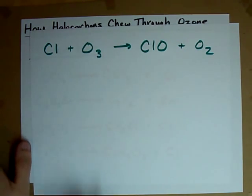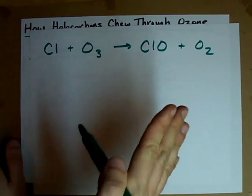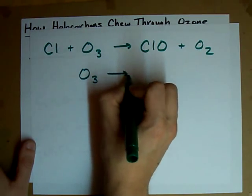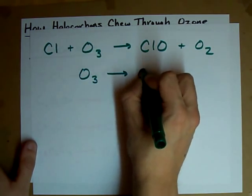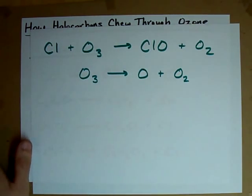Now, so a chlorine destroys an ozone. Big deal. The problem is, also in the upper atmosphere, you have ozone breaking up on its own to create single oxygen atoms and O2.